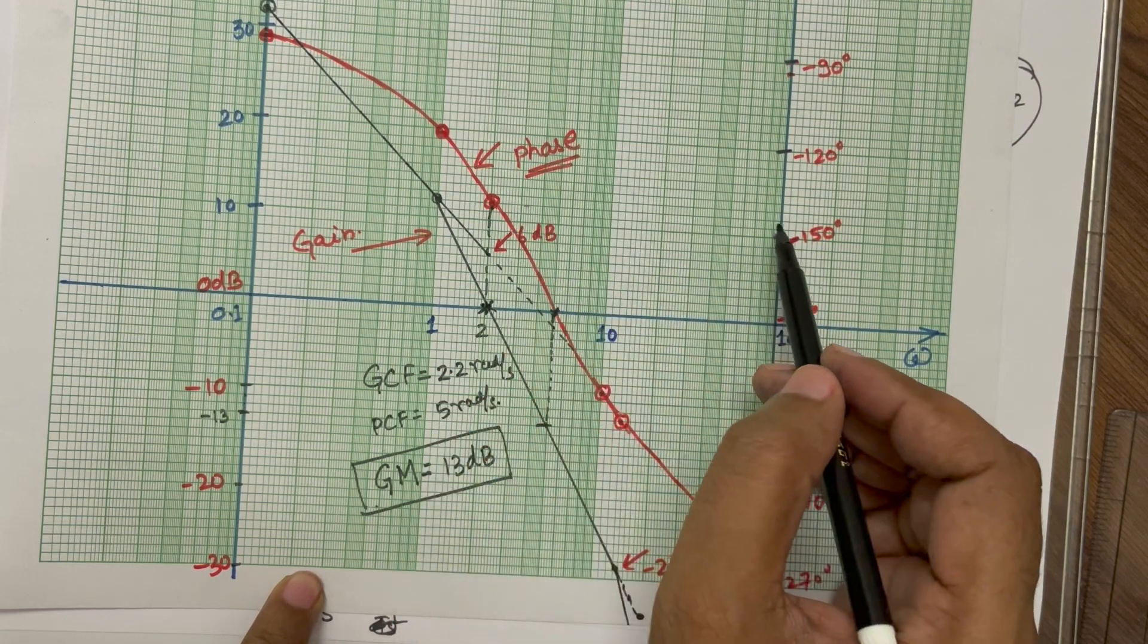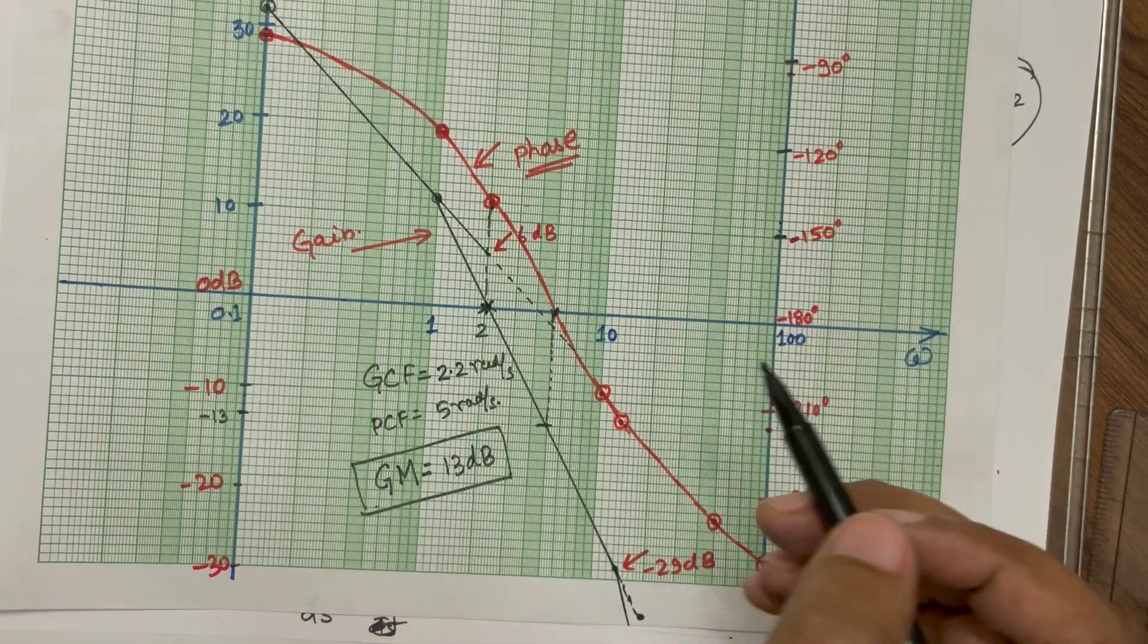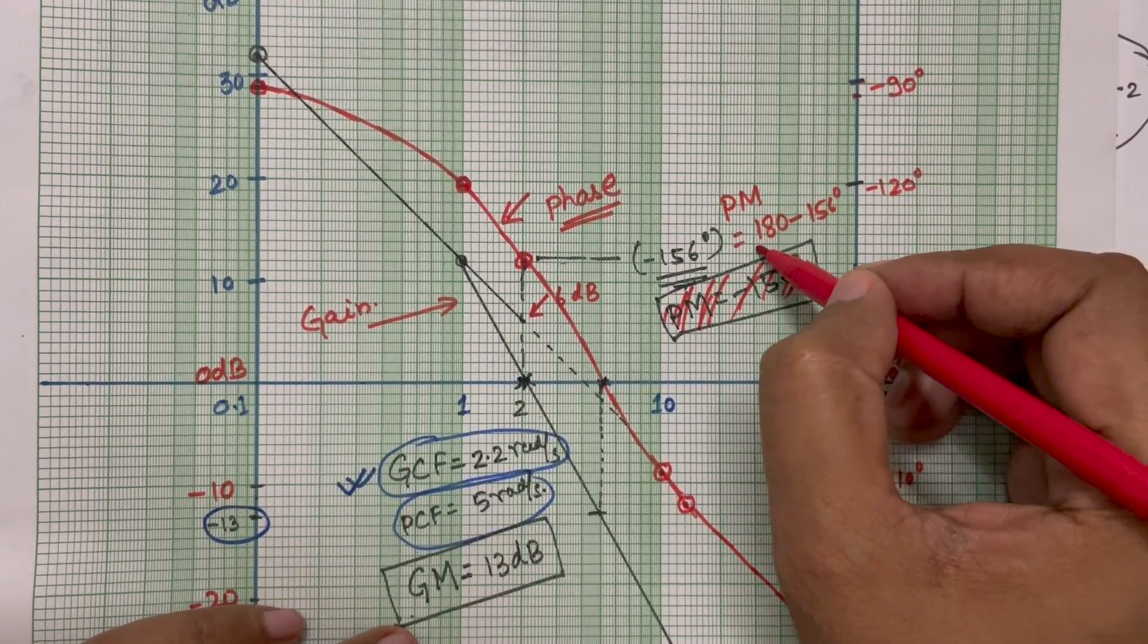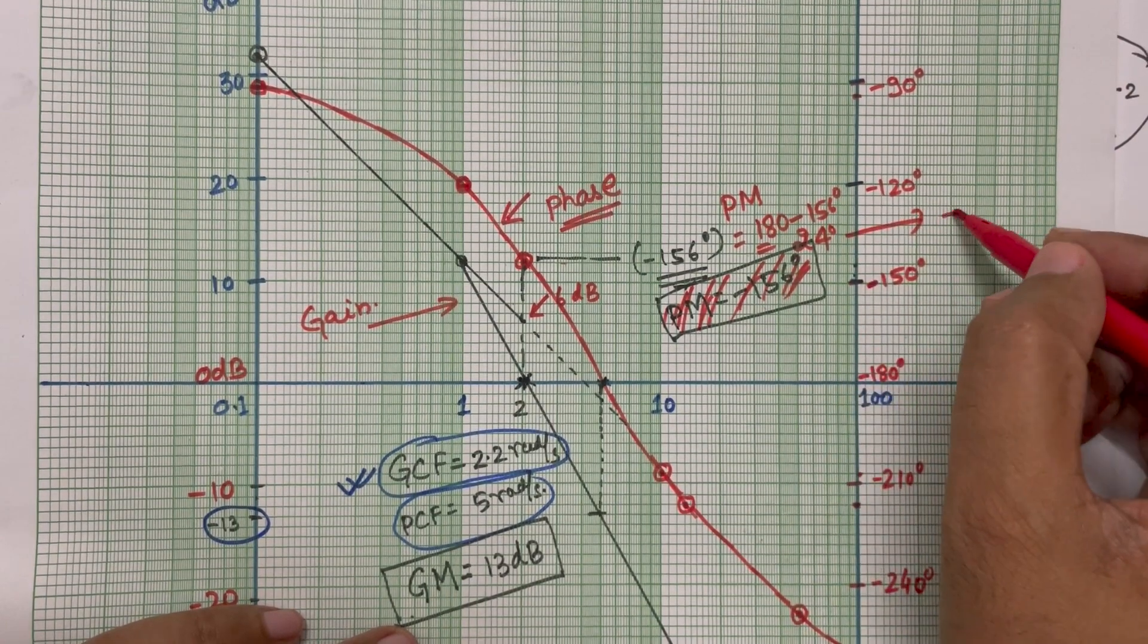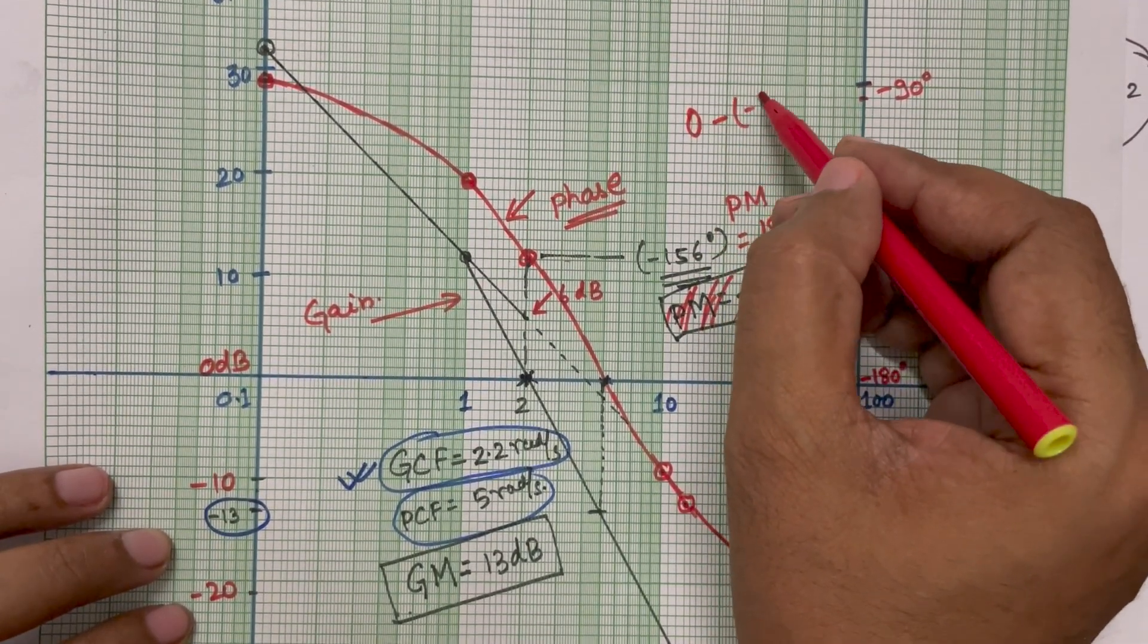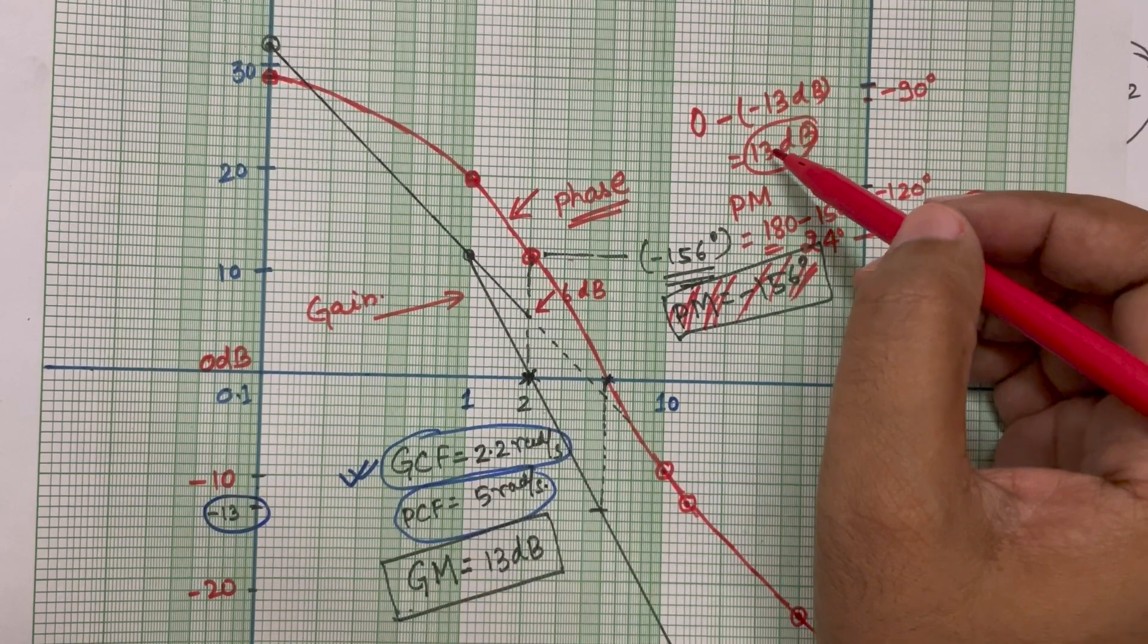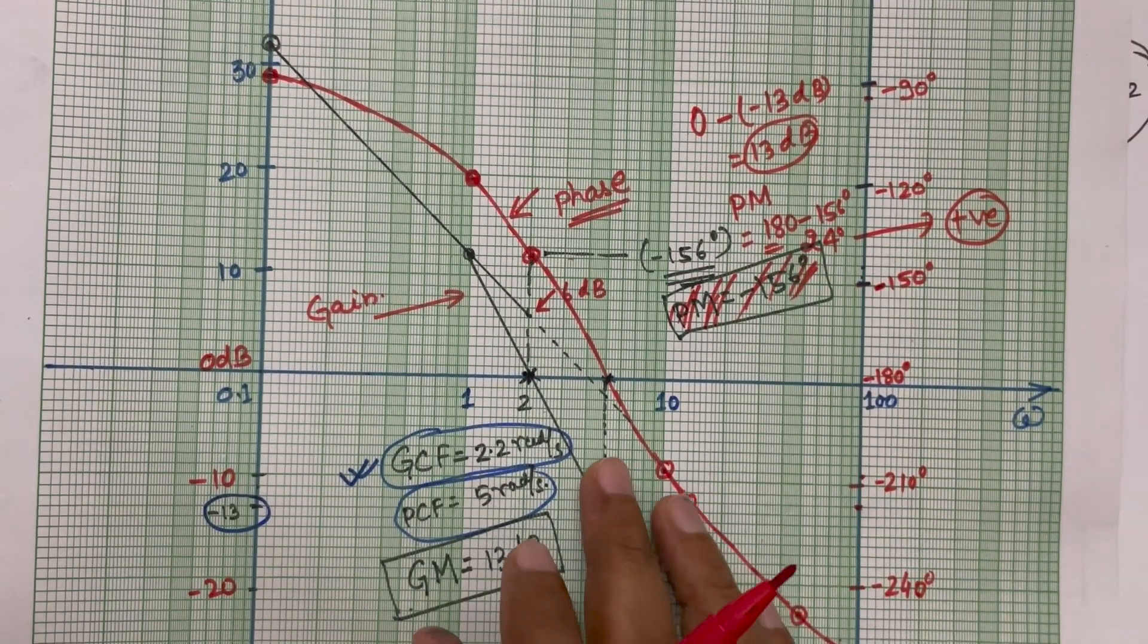And for phase margin wherever it is crossing zero we can just see the angle. So this angle is around 150, 53, 56 so roughly minus 156 degree so it's minus 156 degree that means the phase margin is 180 minus 156 degree which is 24 degree and this is positive. Gain margin is 0 minus minus 13 dB it means it is 13 dB this is also positive. So both the value should be positive to have the stable system gain margin 13 dB which is a positive value and phase margin is 24 degree which is also a positive value. Thank you.